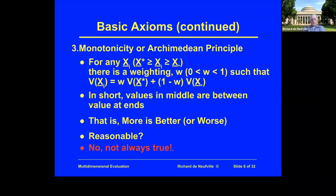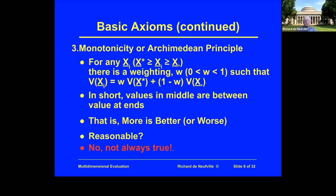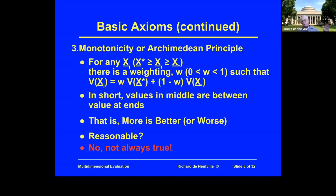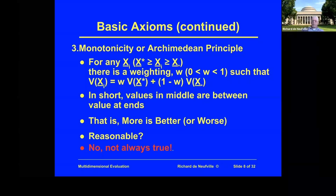The third axiom is sometimes called the Archimedean principle, or monotonicity. It basically says that if we are looking between a range — the best of something and the worst of something — for anything in between, the value is a weighting function: a proportion of the best and a complementary proportion of the worst. The valuation may be going up all the time or going down all the time, but it's not going up and then down or oscillating. It is monotonic, so you can think of something being better than something else in a consistent direction.